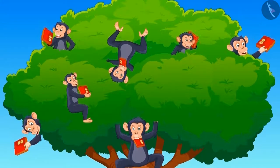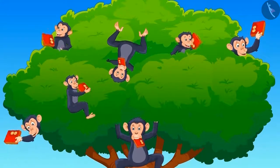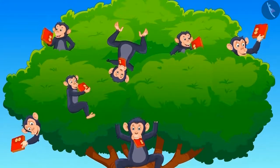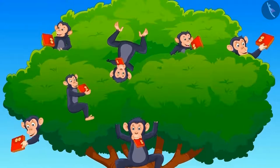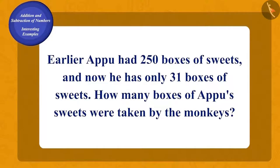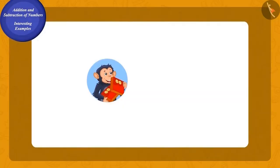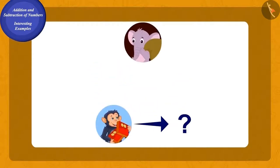When he looked up, he saw that there were lots of monkeys on the tree eating sweets from his boxes. Earlier Appu had 250 boxes of sweets and now he has only 31 boxes. Can you tell how many boxes of Appu's sweets were taken by the monkeys?